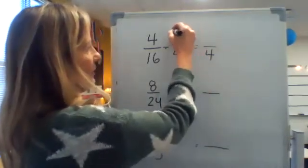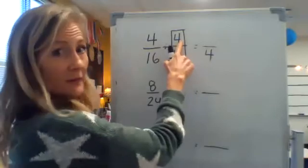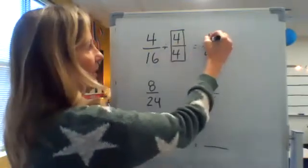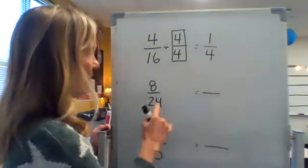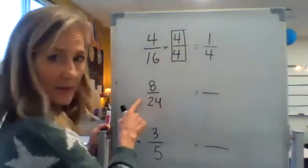And again, I have to give you four times fewer of them in order for it to equal the same amount. So 4/16 is the same amount as 1/4 divided by four. Let's try this one.